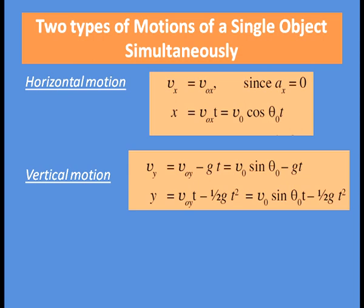So y = V0 sin θ₀ · t − ½·g·t². The horizontal motion is motion with constant velocity, and the vertical motion is motion with constant downward acceleration. The vector sum of the two respective components gives the velocity and position of the projectile at any instant of time.